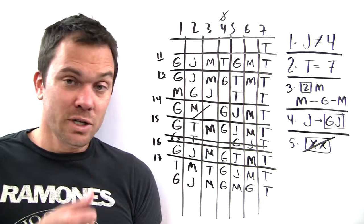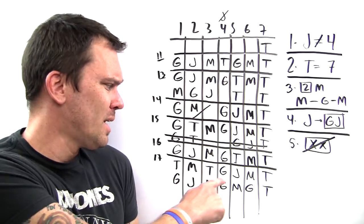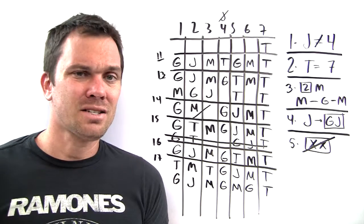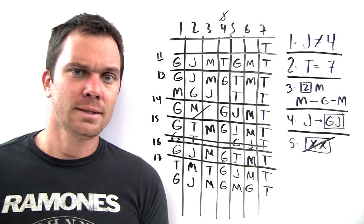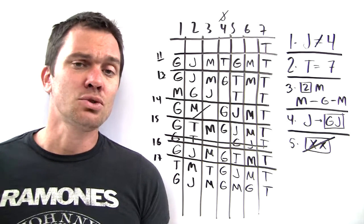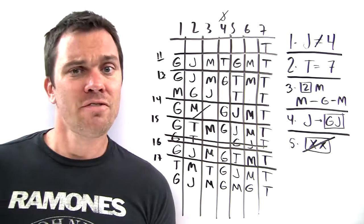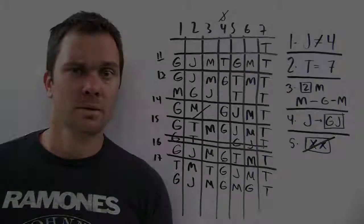Also, answer choice E, at most two voyages to Trinidad. Just by doing this other work, we've shown that's not true. You can have three Trinidads. So D is true. It's our answer. And that finishes this game. Thanks, guys.